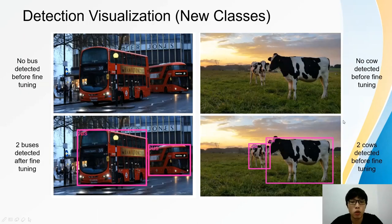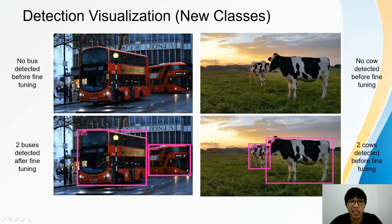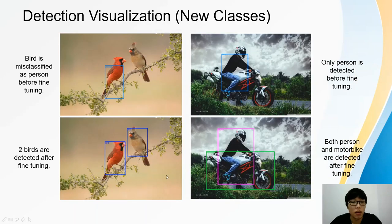The following slides show detections before phase 2 fine-tuning and after phase 2 fine-tuning on new objects. Before fine-tuning, no bus and no cow objects are detected, but after fine-tuning, the bus and cow objects are detected. Before fine-tuning, the model misclassifies birds as persons, but after fine-tuning, both birds are correctly detected. Before fine-tuning, only the person class is detected, but after fine-tuning, both persons and the motorbike class are detected.